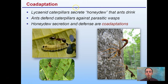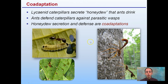If we look at an example of co-adaptation, we have caterpillars that are secreting honeydew for ants to drink. Why would they do this? Ants will go out of their way to defend caterpillars against parasitic wasps, which can kill the caterpillars. So the honeydew secretion and defense are co-adaptations — the honeydew supplied to the ants by the caterpillars provides the caterpillars with physical protection from parasitic wasps that can lay an egg and literally cause the caterpillar to die.